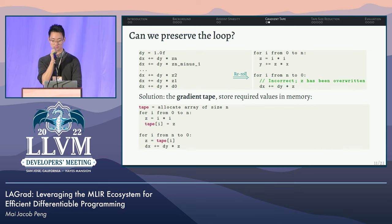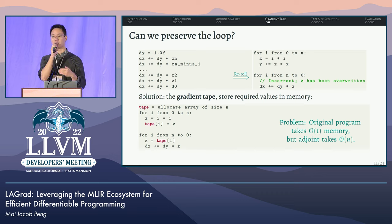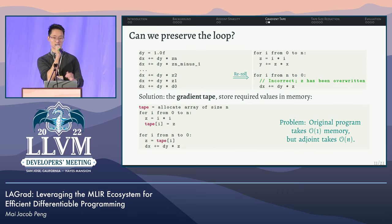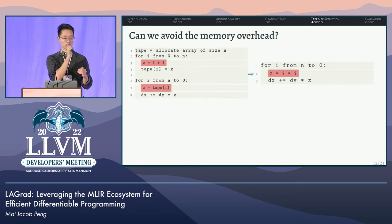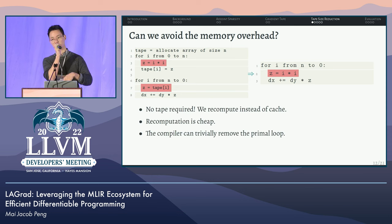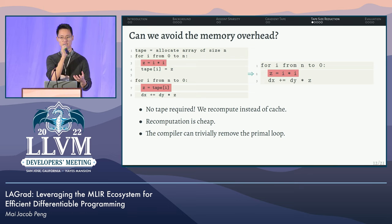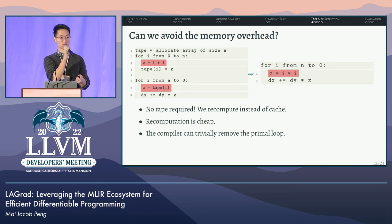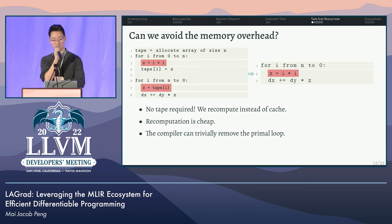The tape introduces a problem: the original program can be computed using only constant memory, but using the tape introduces an overhead of linear memory. Is there any way to avoid this? Conceptually the tape is operating like a cache, and if we are caching something, let's try to recompute it instead. The recomputation is very cheap, so we can eliminate the tape — and not only the tape, but the entire primal loop, since we just don't need it. Our adjoint program now has the same memory and performance characteristics as our original program.